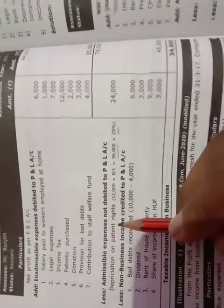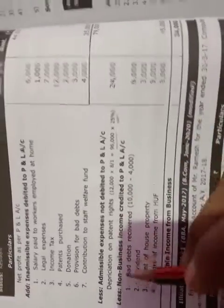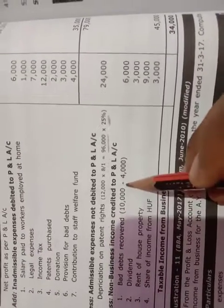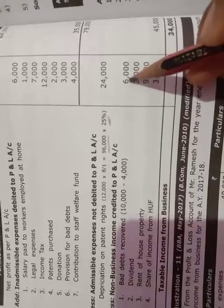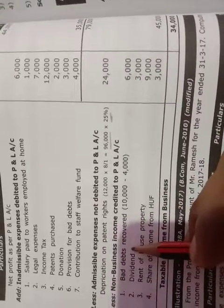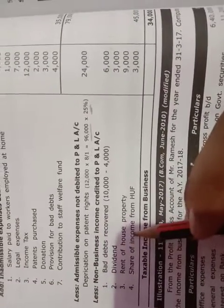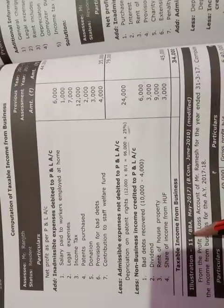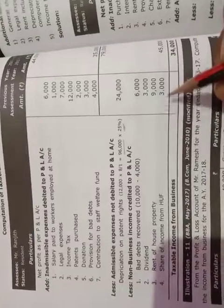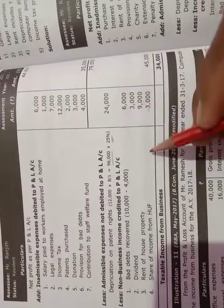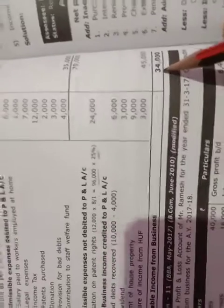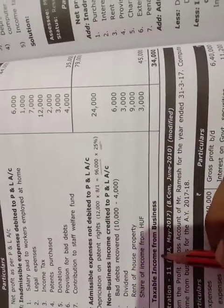Less non-business income credited to profit and loss account: Bad debts recovered — 10,000 total, allowed earlier 4,000, so disallowed portion is 6,000. Dividend — non-business income, taken here. Rent from house property — non-business income: 9,000. Share of income from HUF: 3,000. Total deductions: 45,000. 79,000 minus 45,000 = 34,000 as taxable income from business.